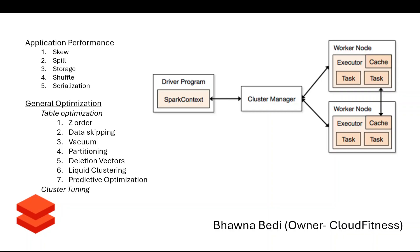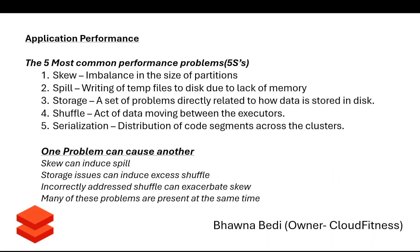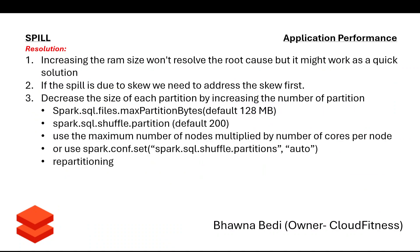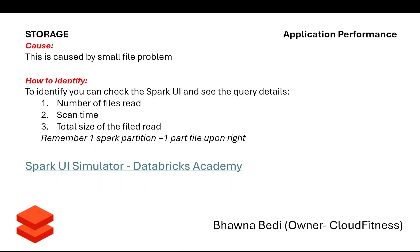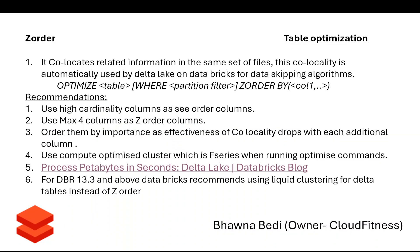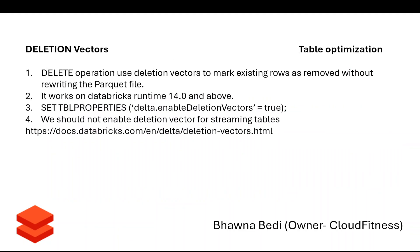We have already discussed application performance and general optimization techniques in Databricks. We've talked about the Spark UI Simulator, the five most common performance problems, skew, spill, shuffle, storage, serialization, data skipping, z-order, vacuum, partitioning, and deletion vectors in previous videos.